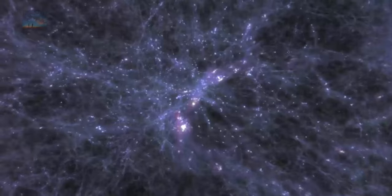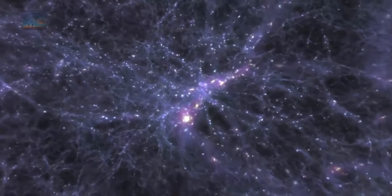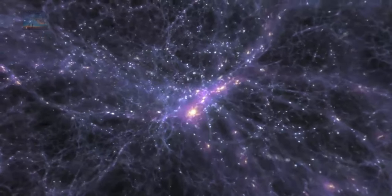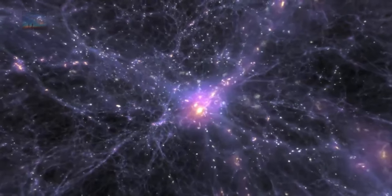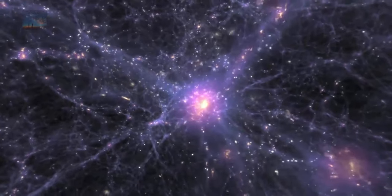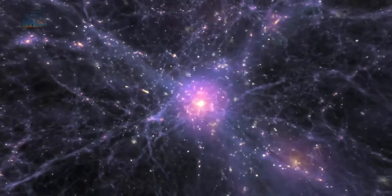As it turns out, UGC 1382, at about 718,000 light-years across, is more than seven times wider than the Milky Way. It is also one of the three largest isolated disk galaxies ever discovered, according to this study.